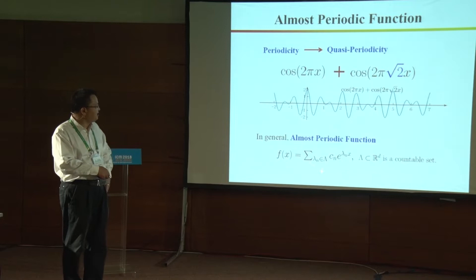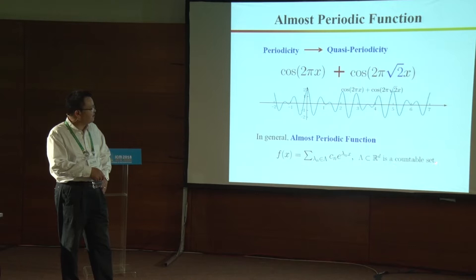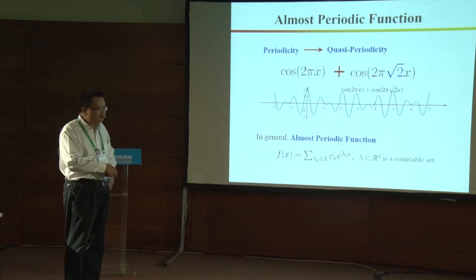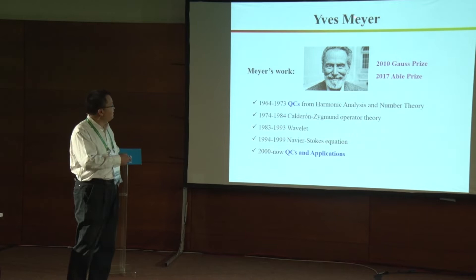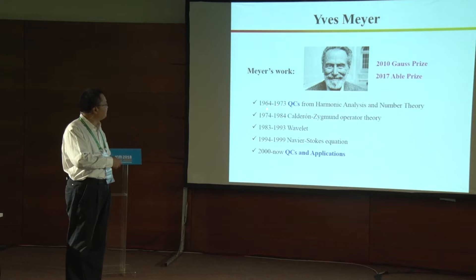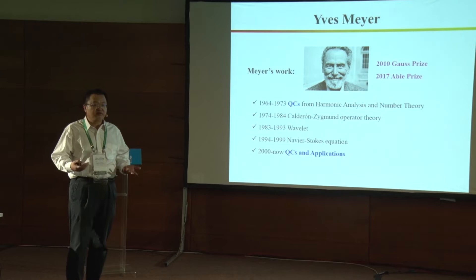In general, an almost periodic function can be defined this way. The important thing here is the set Λ — this is a countable set. This function can be expressed as a sum over λ_n in Λ with coefficients c_n. Meyer is a very well-known mathematician who received the Gauss Prize and the Abel Prize. From 1964 to 1973, he worked on quasicrystals using harmonic analysis and number theory, publishing two books on the subject.